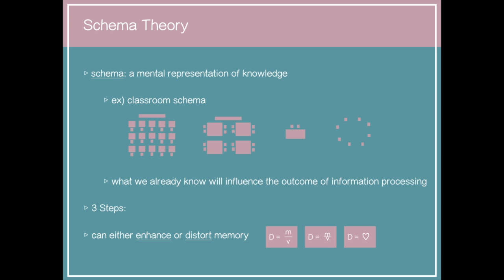Schema theory states that what we already know will influence the outcome of information processing. Schema theory involves three steps. The first is encoding — transforming sensory information into a meaningful memory, like smelling bread or seeing Kim Kardashian. The second is storage — maintaining the experience in memory, creating a biological trace. The last is retrieval — recovering the experience from memory.